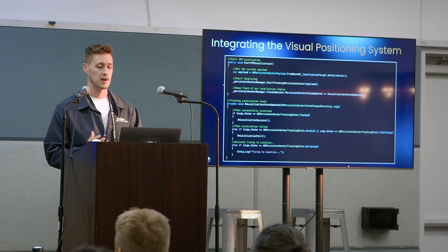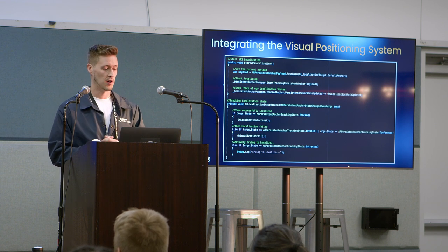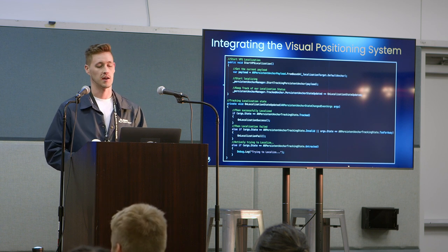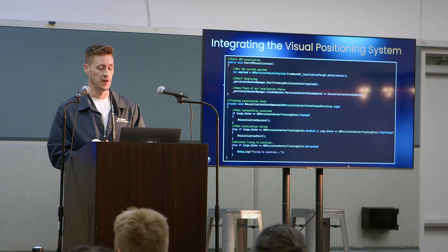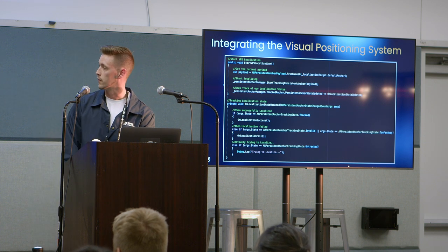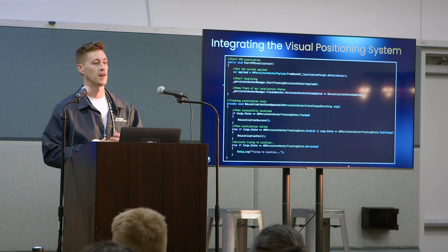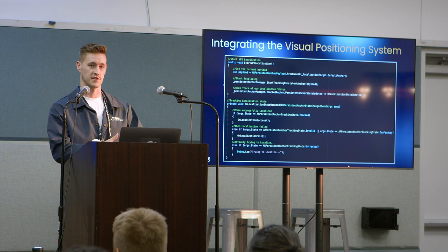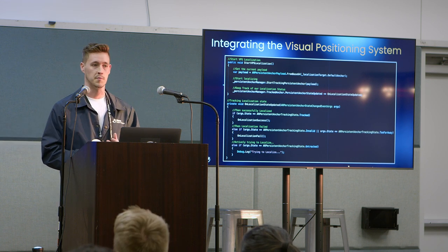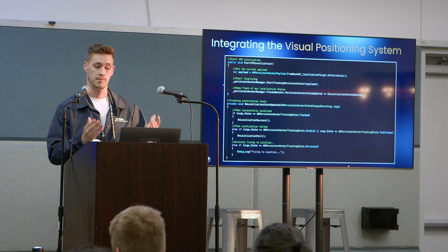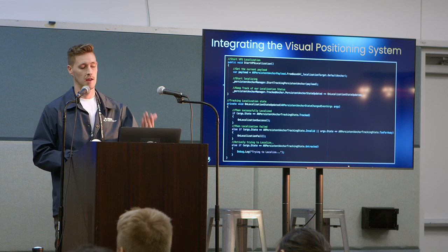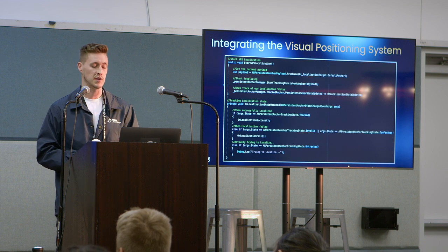Here's a small snippet showing how to integrate the visual positioning system. Just a few functions to start VPS and keep track of its localization state. One thing to call out: the default localization target came from the Coverage API. So the flow is: a user says they want to navigate to the Leif Erikson statue, that default anchor gets saved, and that's how you actually synchronize and localize with VPS. In just a few lines of code, we're up and running and localizing, trying to sync that location with what we know on our back end.